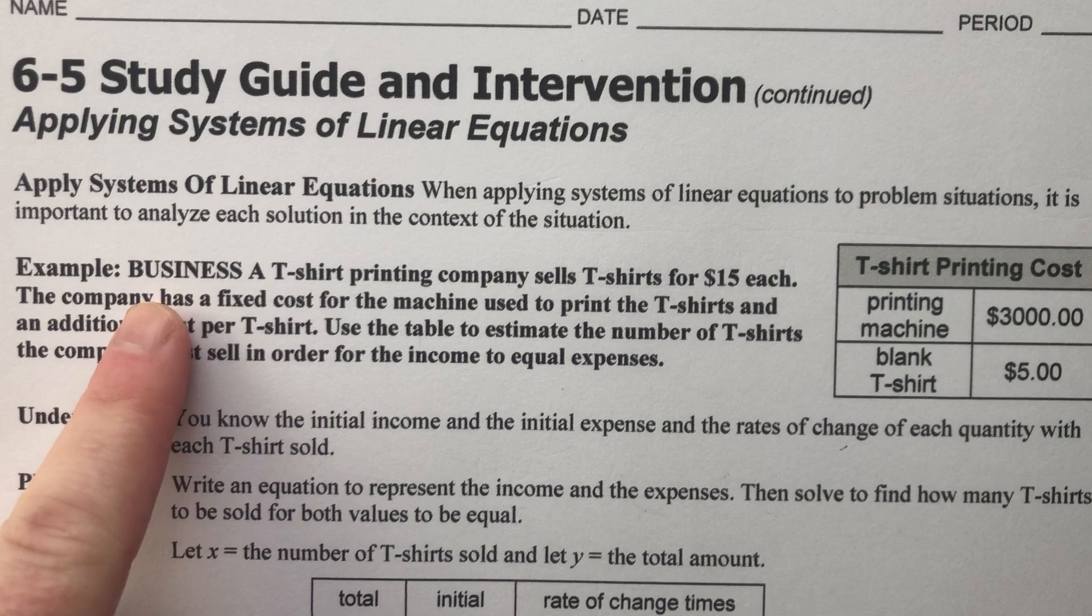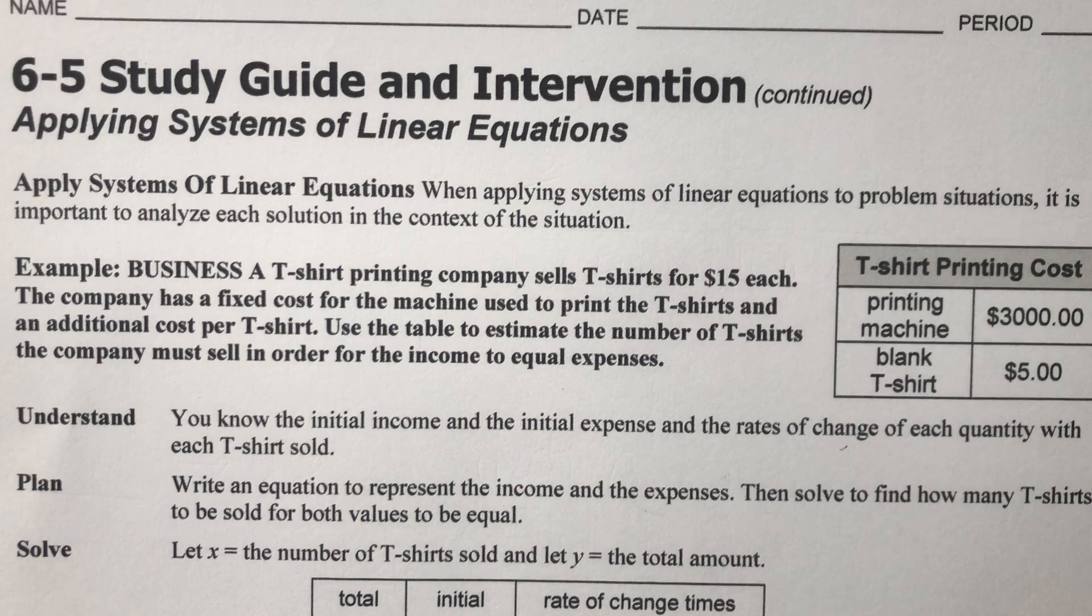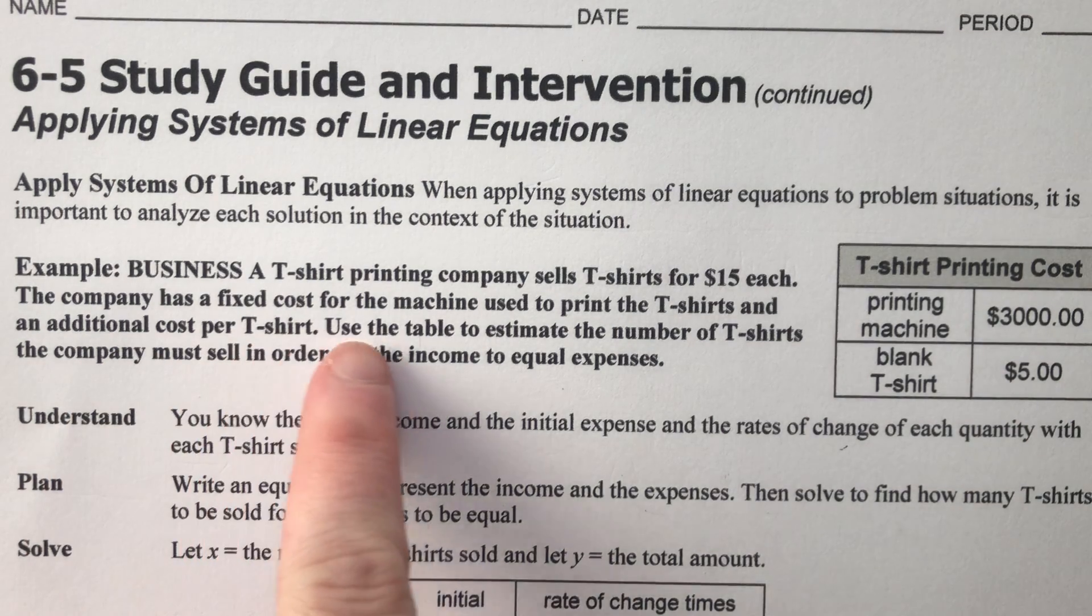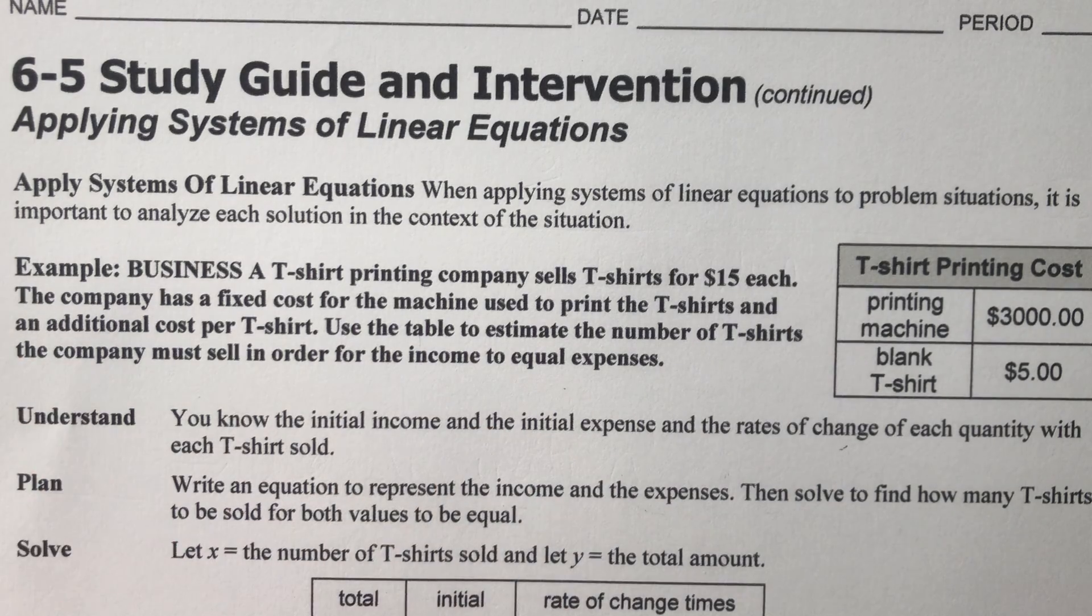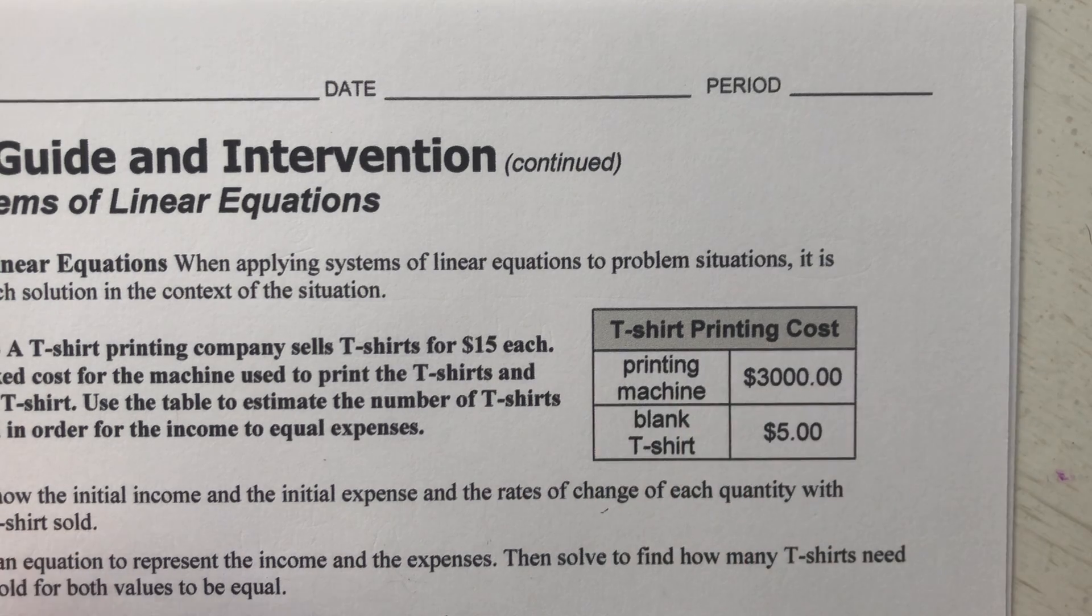Alright, so in this example, a t-shirt printing company sells t-shirts for $15 each. The company has a fixed cost for the machine used to print the t-shirts and an additional cost per t-shirt. A fixed cost just means it costs you that one time. You bought a machine, that's all it costs. It doesn't cost you extra each time you use it. You just paid one time for it. And then each t-shirt that you buy, because you've got to have the blank t-shirts to print on, they each cost five. So here in the table, t-shirt printing costs. A printing machine is $3,000 and a blank t-shirt costs five.